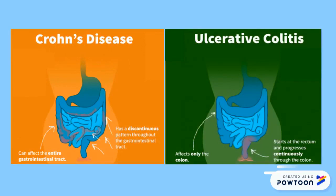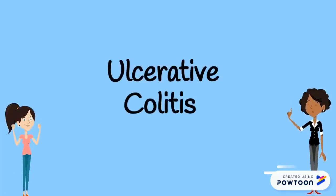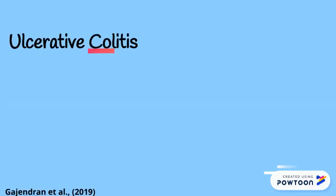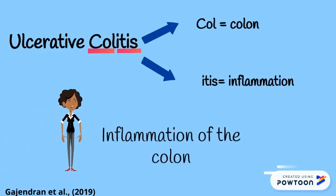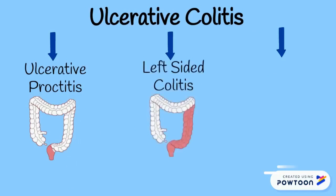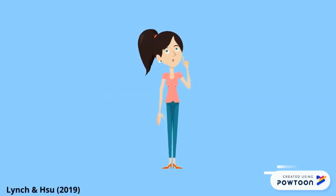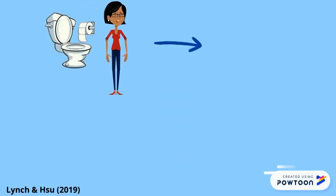Now let's dive into ulcerative colitis. Ulcerative colitis means the inflammation of the colon. Specifically, inflammation extends from the rectum to the proximal colon. There are three types of ulcerative colitis: ulcerative proctitis, left-sided colitis, and extensive colitis. The hallmark symptom of individuals with ulcerative colitis is bloody stool with or without mucus.